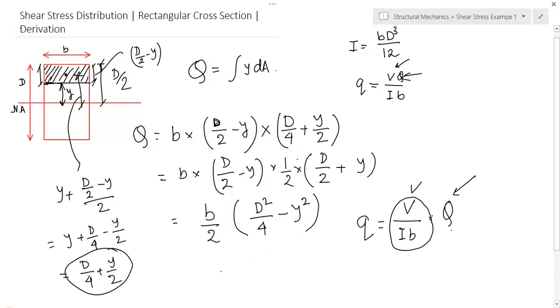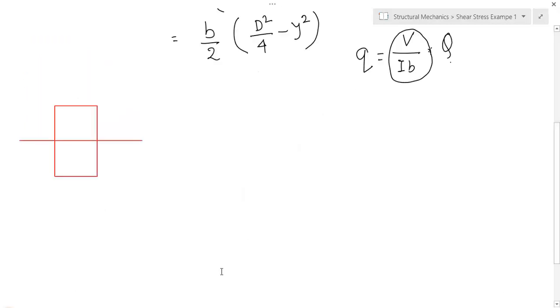So, what is the distribution of this Q with respect to y? Now, you see this is the Q when the y is varying from this neutral axis. y increases in this direction from 0 to d by 2 and also in this direction from 0 to d by 2.